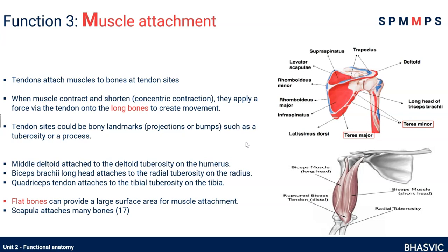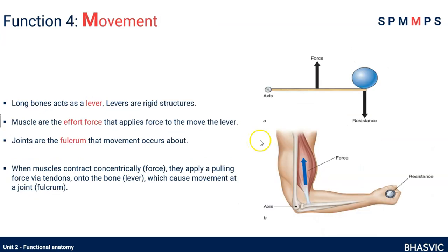Bones are what muscles attach to, and logically following on from that is movement. Our skeleton enables movement because muscles attach to bones, and because we have joints or articulations between two or more bones, these bones function as a lever system. The bones — the hard, rigid structures — are the levers. The muscles provide the effort. The load is either the weight of the limb or something we're holding, like a dumbbell. The joint is the fulcrum around which movement happens. Functions three and four are similar but must be kept separate.